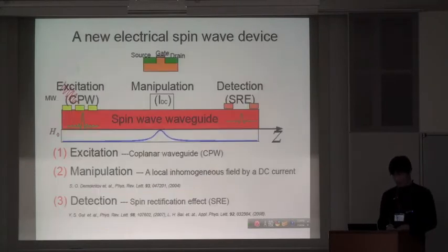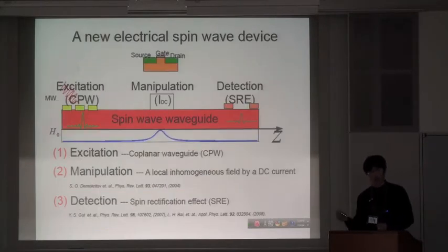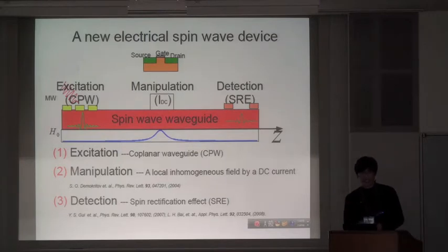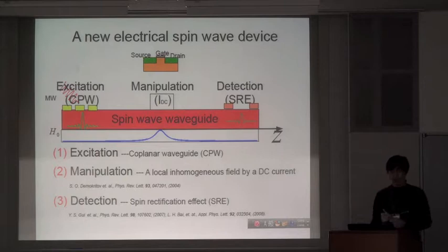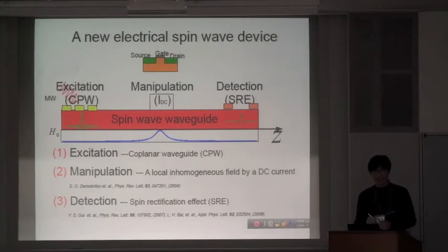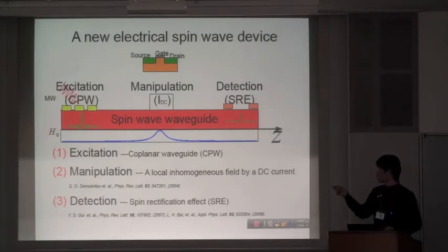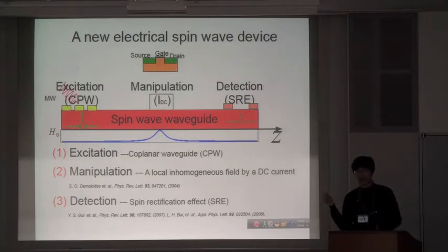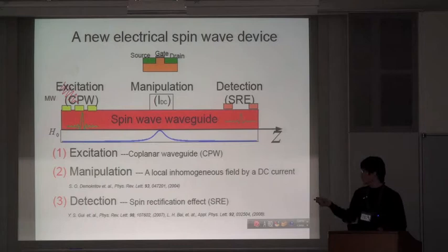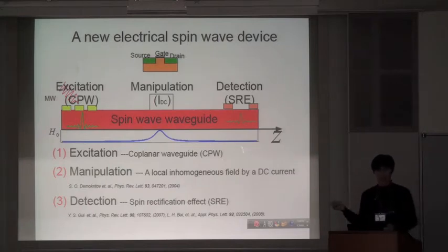When we're talking about device, we're always comparing with the electrical device, this is the FET with the three terminals: a two-dimensional electrical gas channel with three terminals, source, gate, and drain. Comparing with that, we also need a spin-wave waveguide here, and we also need the three terminals, that means the excitation, manipulation, and detection.